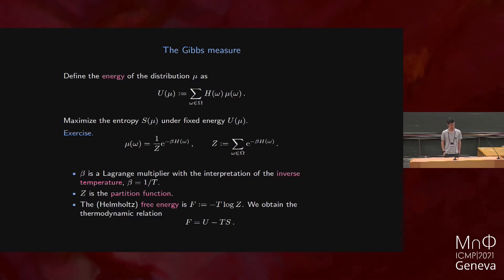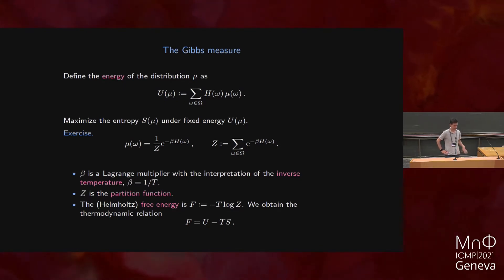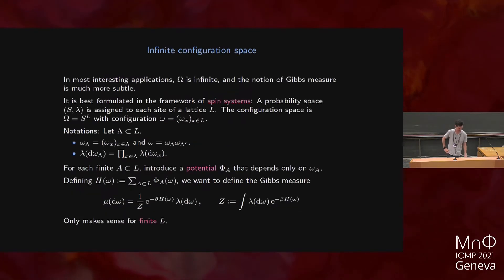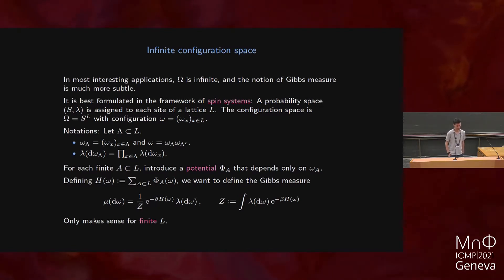That was the Gibbs measure. Now, all of this is good and nice, except underlying all of this discussion was the key assumption that our configuration space is finite. None of this really makes sense if you have an infinite configuration space, yet in most of the things we actually want to do, we do want an infinite configuration space. Then everything becomes much harder and also much more interesting.